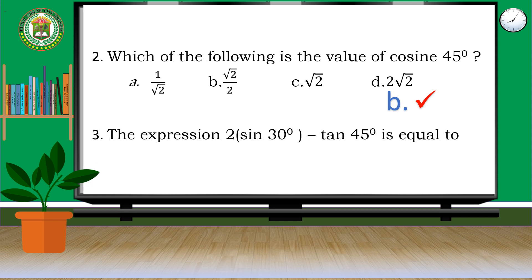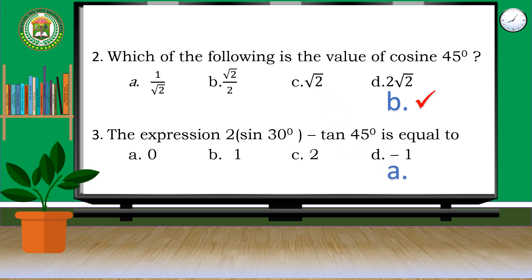Number 3. The expression 2 times the quantity of sine 30 degrees minus tangent 45 degrees is equal to — is it A, 0? B, 1? C, 2? Or D, negative 1? If your answer is A, it's correct!